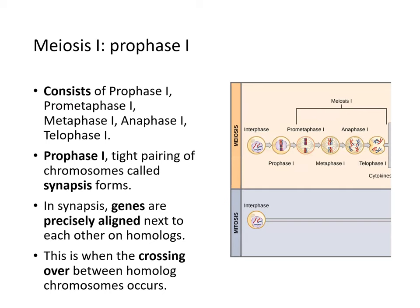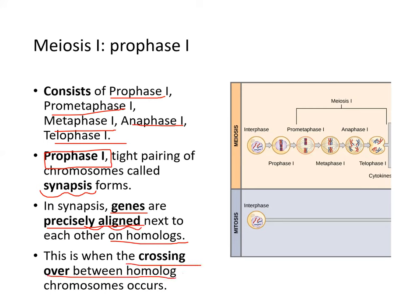Meiosis I consists of prophase I, prometaphase I, metaphase I, anaphase I, and telophase I. In prophase I, a tight pairing of chromosomes called synapsis forms, where genes are precisely aligned on homologous chromosomes. Homologs are one chromosome from mom and one from dad. This is when crossing over can occur between homologous chromosomes.